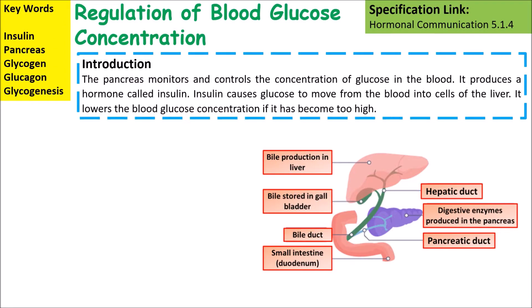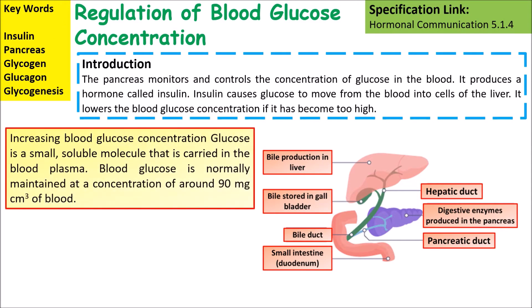The pancreas monitors and controls the concentration of glucose in the blood. Glucose is a small soluble molecule that is carried in blood plasma, so blood glucose is normally maintained at a concentration of around 90 milligrams per centimetre cubed of blood.